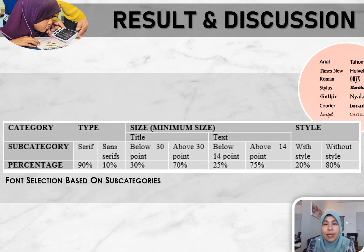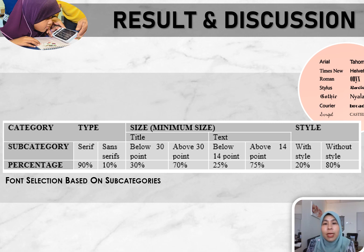Font selections are divided into three subcategories: font type, font size, and font style. Font type is divided into serif and sans-serif. For font size, multiple sizes were given as examples for students to choose from, divided into subcategories for title and text. For style or effect, students chose whether they wanted text with or without effects such as shadow and reflection. Results show that students prefer to use a serif font type. For font size, the majority chose above 30 points for title and above 40 points for text. For style, students prefer font without effects.